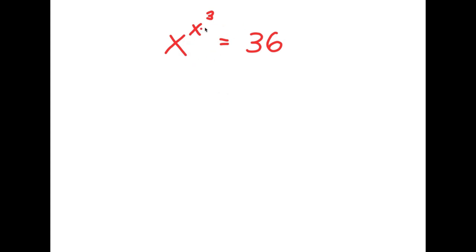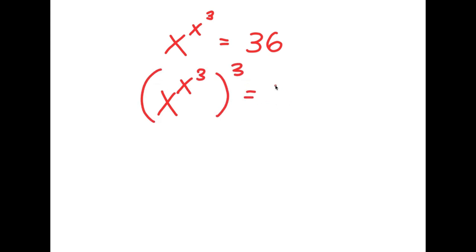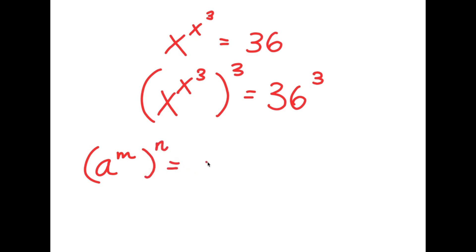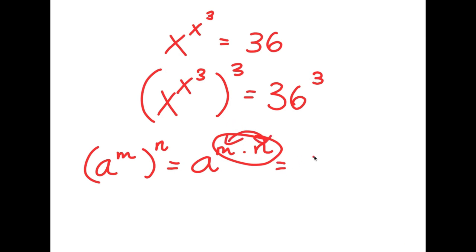In this problem I have x to the power of x to the power of 3, equal to 36. To solve this, I start by raising both sides to the power of 3, giving x to the power of (x³) to the power of 3, equal to 36 to the power of 3. If I have something in the form a to the power of m, to the power of n, this equals a to the power of m times n.